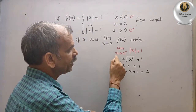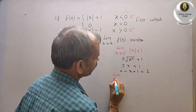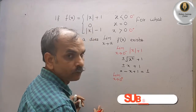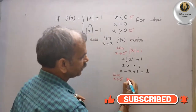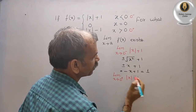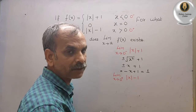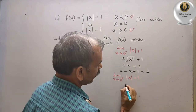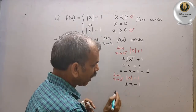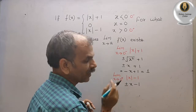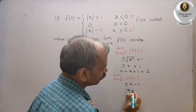Next is the limit as x tends to 0 plus. For 0 plus, we take the value modulus of x minus 1, which equals plus or minus x minus 1.